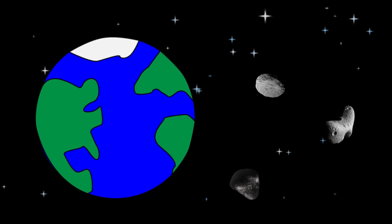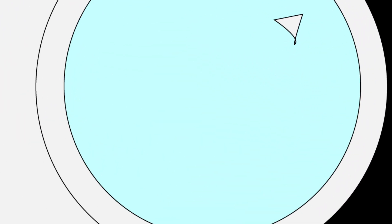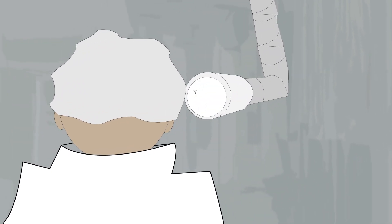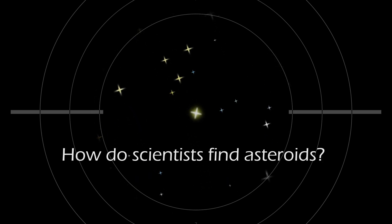With asteroids being the most plentiful objects in our solar system, you'd think they'd be easier to find. But if you look up at the night sky, even with a powerful telescope, the best you're going to get is a small dot that looks just like a star. Well then, how do scientists find asteroids?